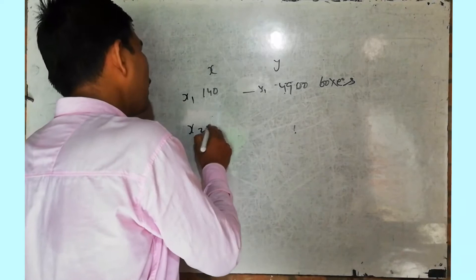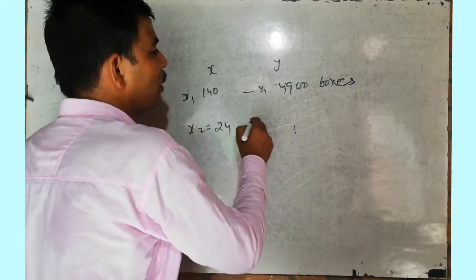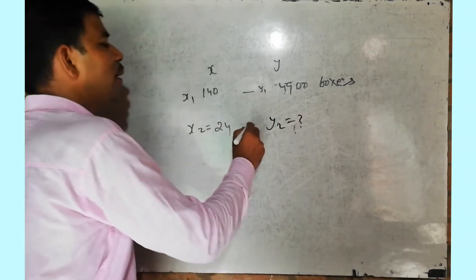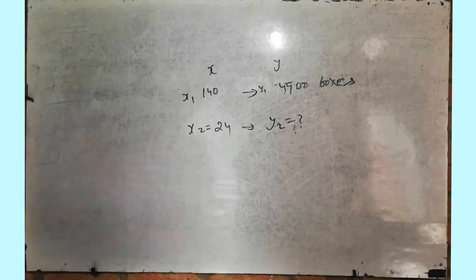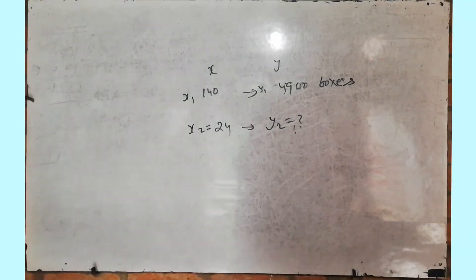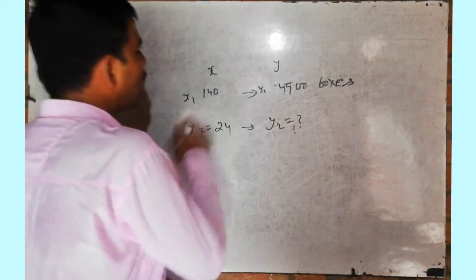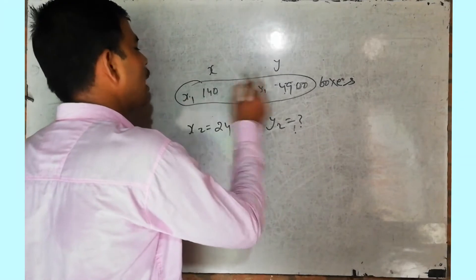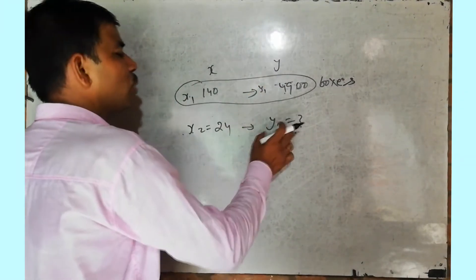So simply, the question is set up: 140 balls for Rs. 4900 — this becomes x1 and y1. x2 is 24 (two dozen), and we have to find y2. We solve it this way using x1/y1 = x2/y2. This is your direct proportion question. This divided by this, this divided by this, equal to this divided by this.